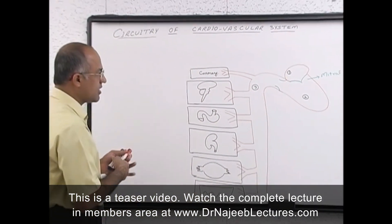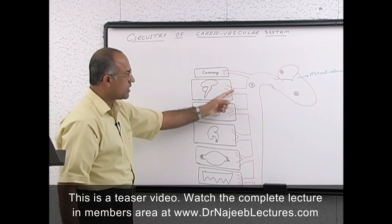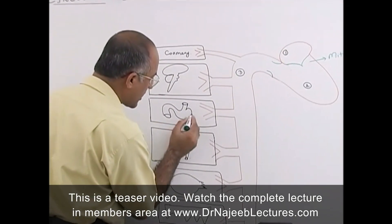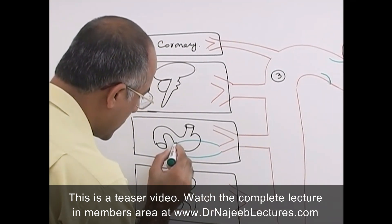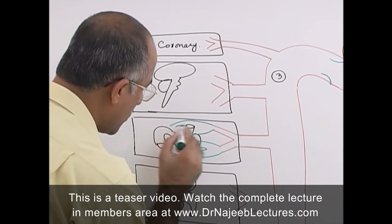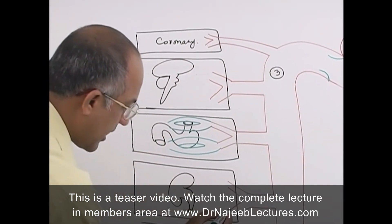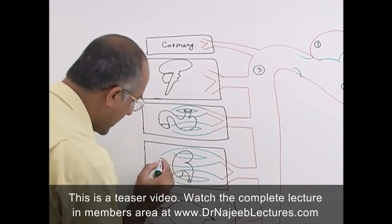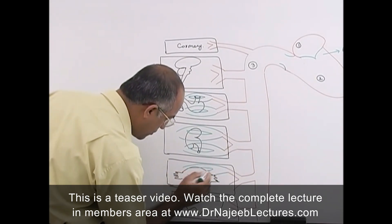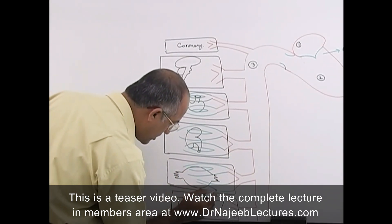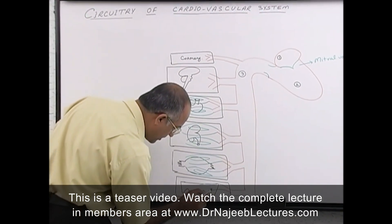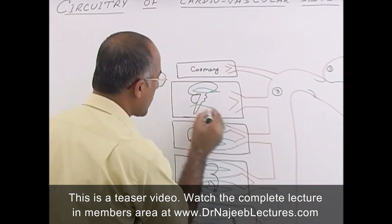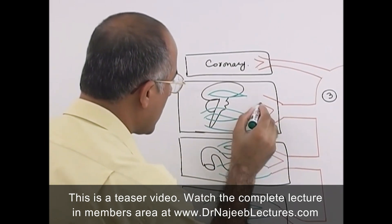After the arterial tree breaks down into arterioles, arterioles further break down into smaller vessels called capillaries. Within the tissue, arterioles eventually break down into capillary networks, which are fed by the arterial tree.